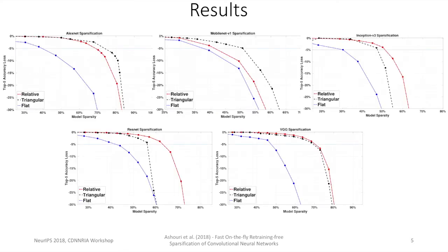Using our sparsification framework, we observed that we gained from 40% up to 73% sparsity by incurring only 5% loss in top 5 accuracy.